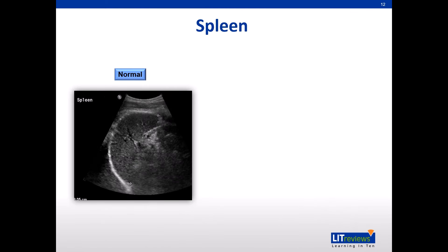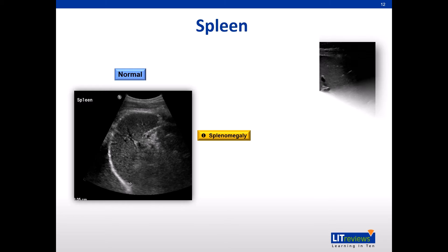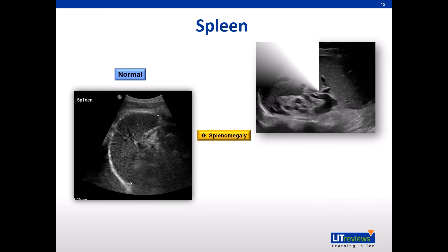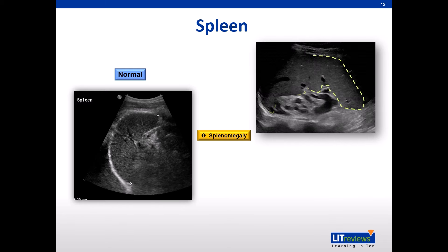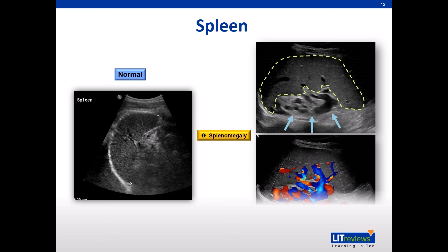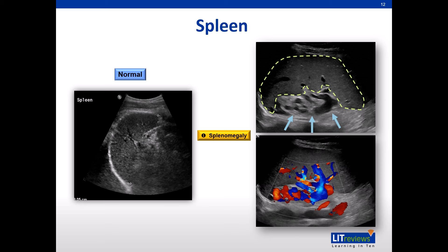This image shows how a normal spleen appears on ultrasound, measuring less than 12 cm. The image on the top right is an enlarged spleen with tubular black anechoic splenic varices. Colour Doppler will fill up the lumen of the varices.